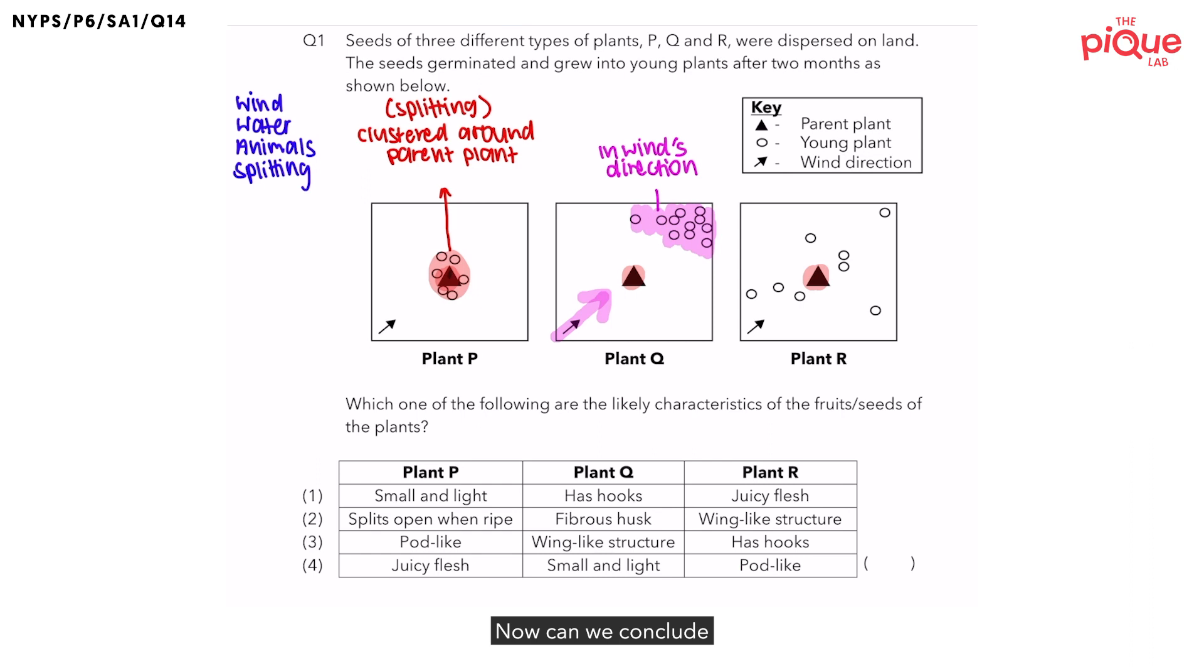Now, can we conclude what is the dispersal method for the fruits or seeds of plant Q? Is it by wind, water, animal, or splitting? It is by wind.